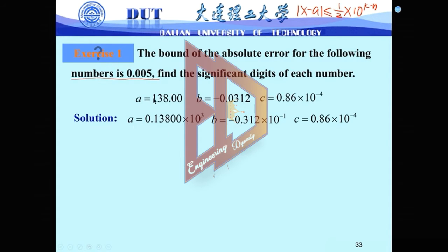For A, we write it in the normalized form. First thing, you need to write A into normalized form. So you move the decimal place 1, 2, 3. So 0.13800 multiply 10 to 3. So that means we know for A, k is 3.